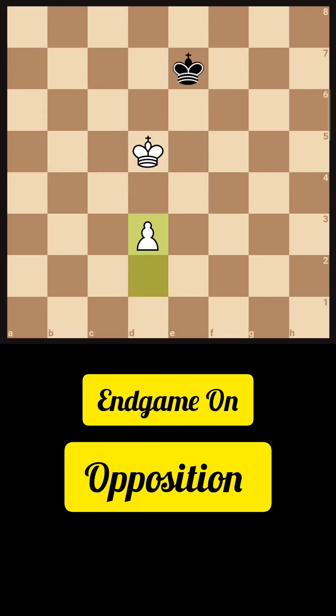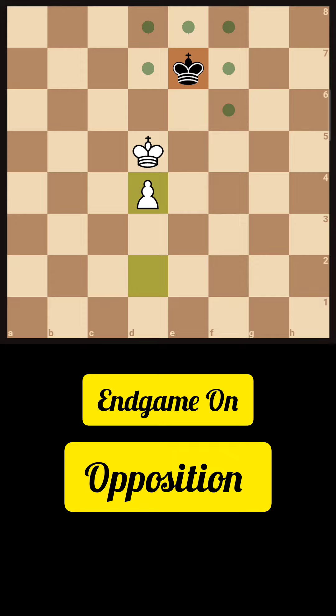In this position, if white plays d4 at first instead of d3, black gets the opposition by playing d7, which won't be really good for white.